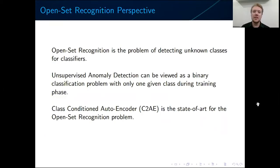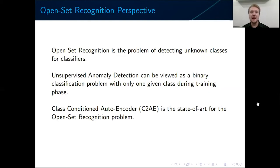The open set recognition problem is the problem of detecting unknown classes for classifiers. For example, if we have a classifier which tells us whether in the picture there is a dog or a cat, and we feed the system with a picture of a horse, then it should tell us that it is neither a dog nor a cat — it is an unknown object. This is open set recognition. Unsupervised anomaly detection can be seen as a degenerated example of the open set recognition problem: we train the system only on normal samples, and anomalous samples can be seen as unknowns.